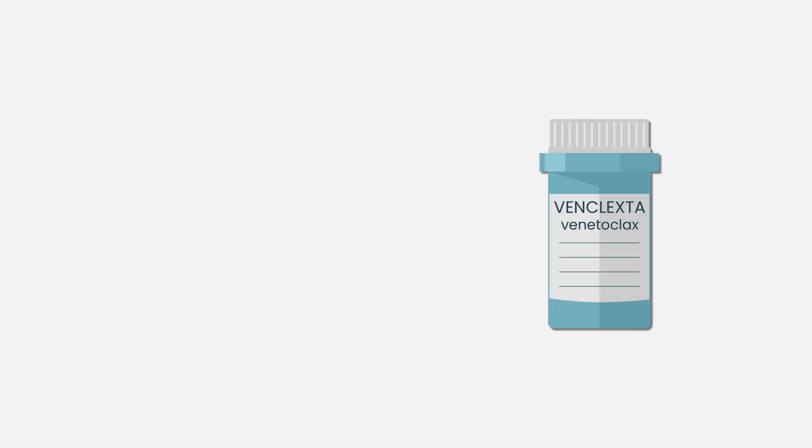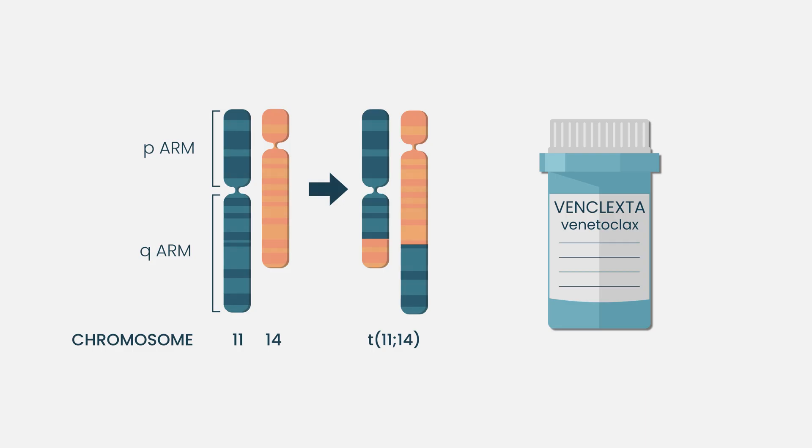It's important to know these cytogenetic findings in terms of mapping out long-term outcomes and different therapy options. As technology improves, understanding which genetic abnormalities a patient has helps drive specific therapies — as in the case of venetoclax, where we know people with an 11;14 translocation have a higher chance of responding to that drug.